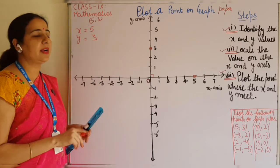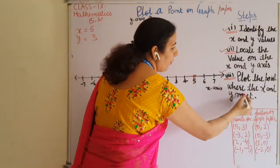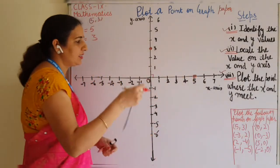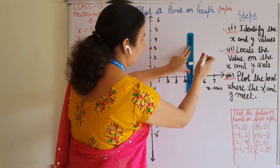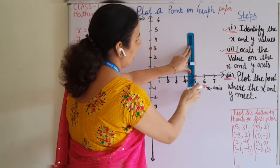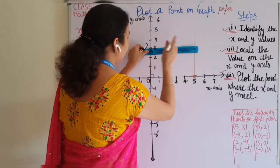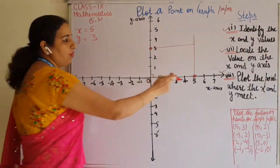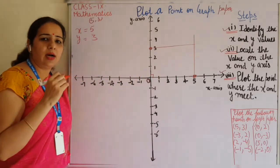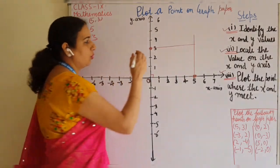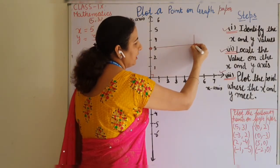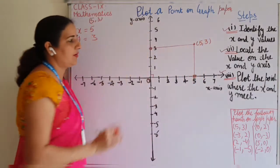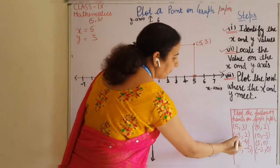The third step is: plot the point where x and y meet. You just extend the line from x equals 5 upward and extend the line from y equals 3 sideways. These two perpendicular lines will intersect each other — you can draw them freehand as well. When these two lines intersect, that intersection point is your point (5, 3).